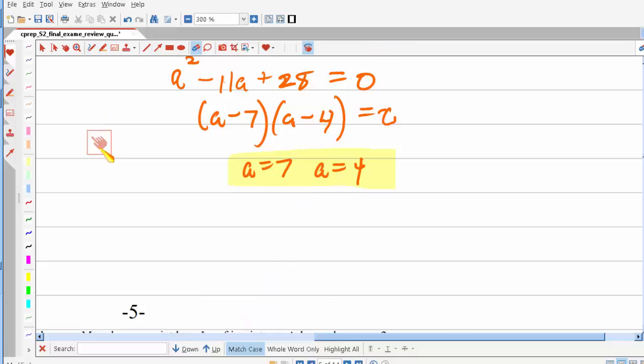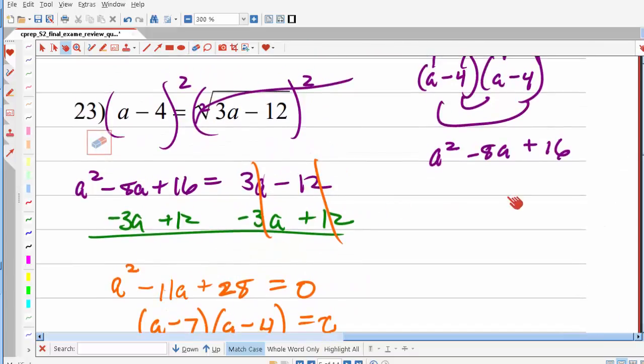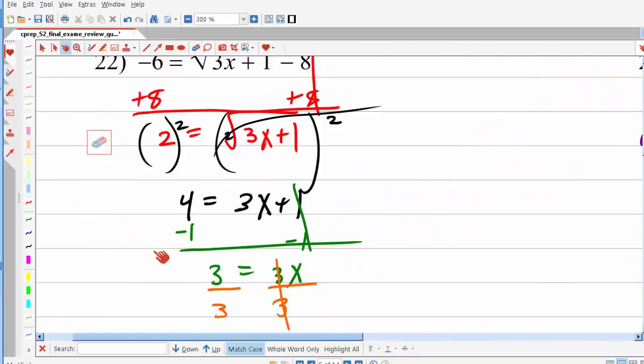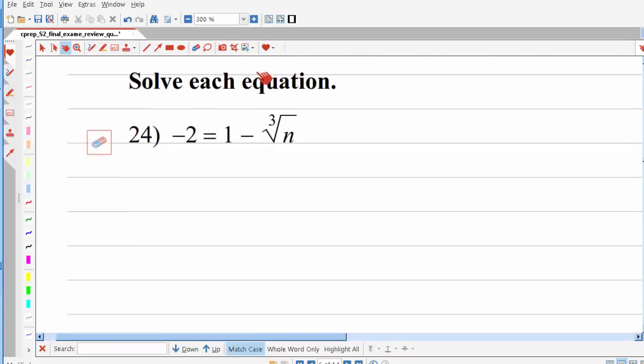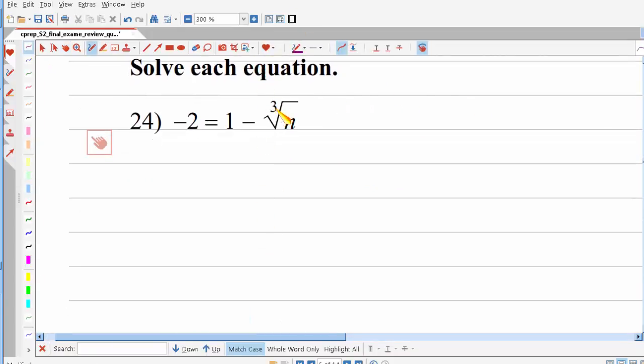There we go. Okay, is there one beside it? No. So I'm gonna move on to 24. Okay, so the same rules apply here if it's the third root equation. I want to get the radical expression all by itself.